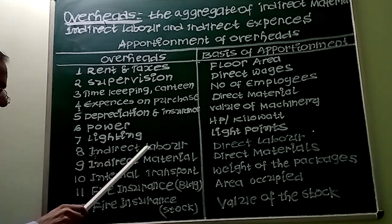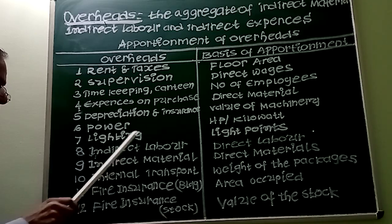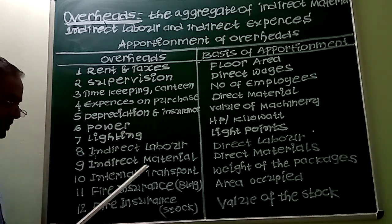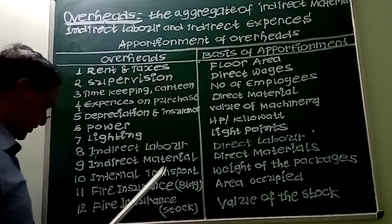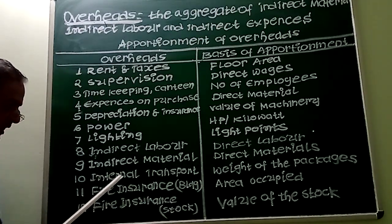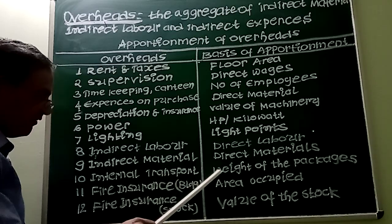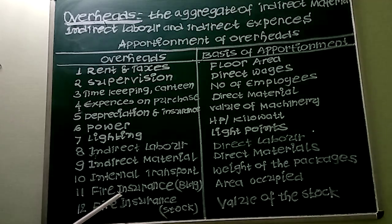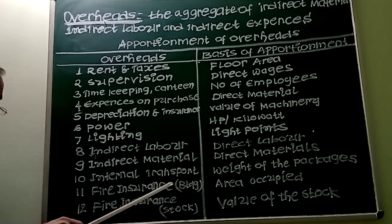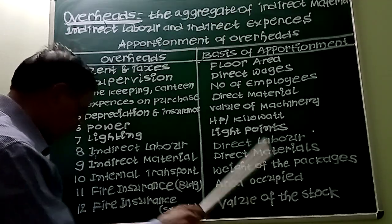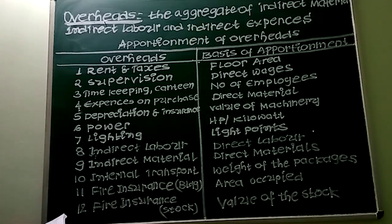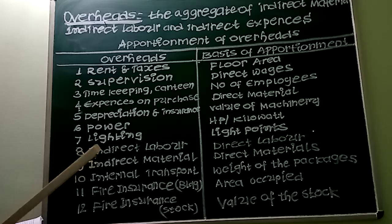Indirect labour is always apportioned on the basis of direct labour. Indirect materials can be apportioned on the basis of direct materials. Internal transport can be apportioned on the basis of weight of the packages or containers. Fire insurance premium on building can be apportioned on the basis of area occupied. Fire insurance on stock is always apportioned on the basis of value of stock.